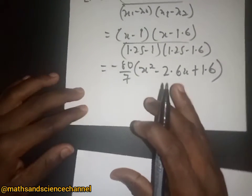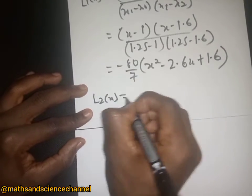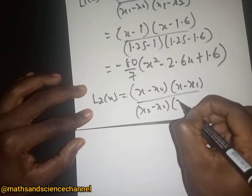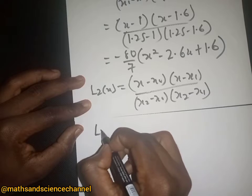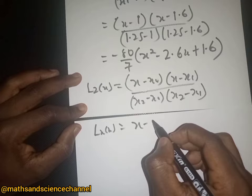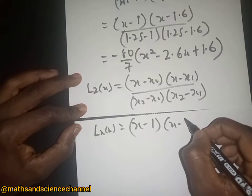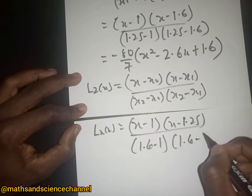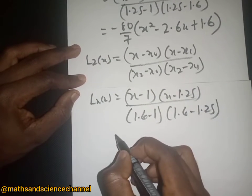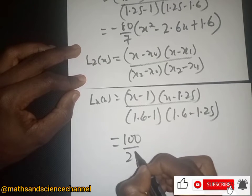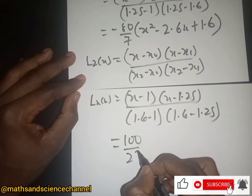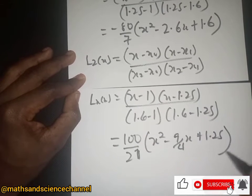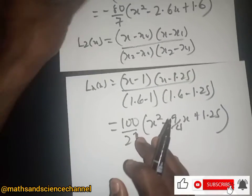For L₂(x) = (x - x₀)(x - x₁) / [(x₂ - x₀)(x₂ - x₁)]. With x₀=1, x₁=1.25, x₂=1.6, we have (x - 1)(x - 1.25) divided by (1.6 - 1)(1.6 - 1.25). This gives 100/21. Expanding: (100/21)(x² - (9/4)x + 1.25).